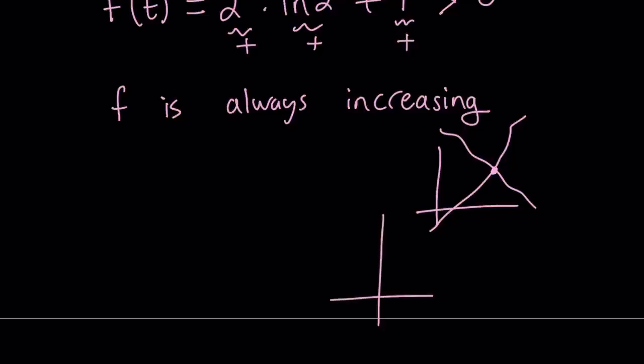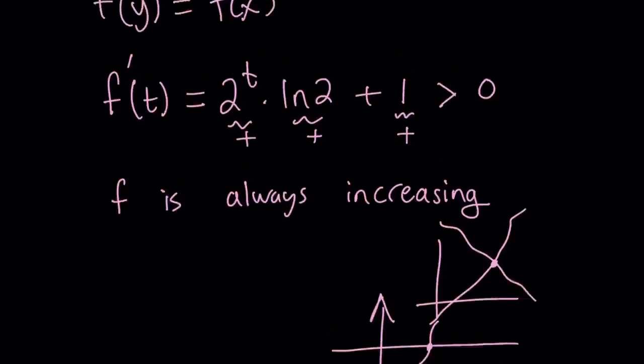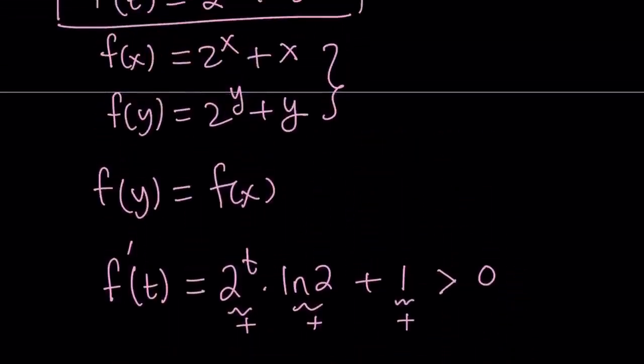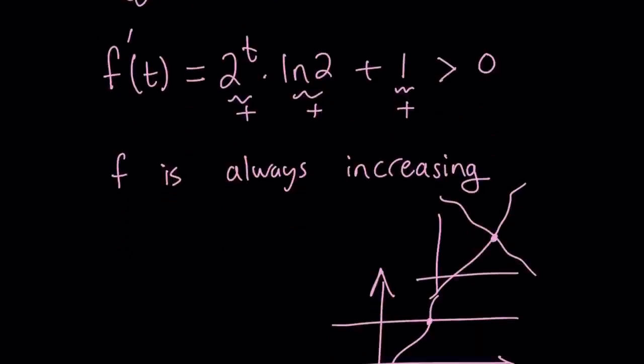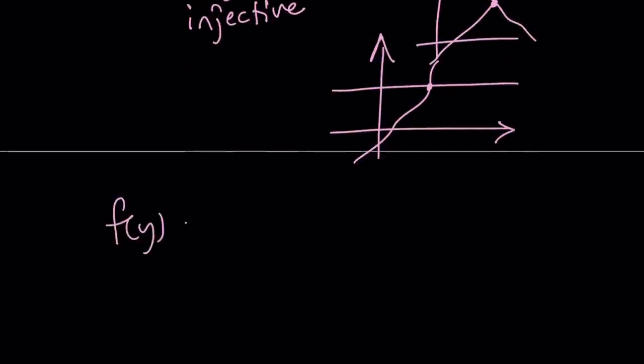What happens if you have an increasing function and a constant, which is a horizontal line? Again, the same situation applies. We have a single intersection point. So, now, we can safely say that since f is always increasing, it is going to be injective or one-to-one. And since f is injective, f of y equals f of x is just going to imply y equals x.